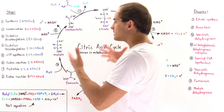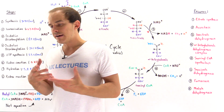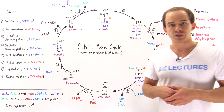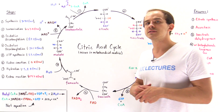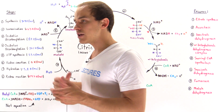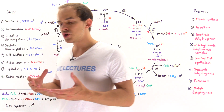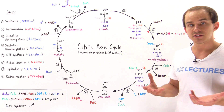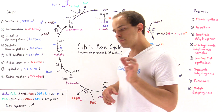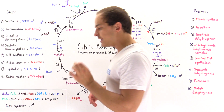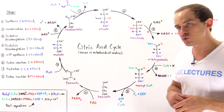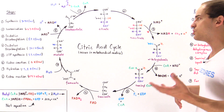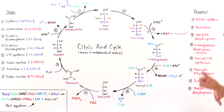Before this process can actually begin, we have to break down glucose molecules into pyruvate molecules in the process we call glycolysis, and that takes place in the cytoplasm of the cell. Once we form the pyruvate molecules, if we have plenty of oxygen present in the cell, then the pyruvate molecules will move into the matrix of the mitochondria via a special type of protein found in the membrane of the mitochondria known as pyruvate translocase.